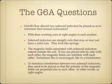How should two solenoid inductors be placed so as to minimize their mutual inductance? With their winding axes at right angles to each other — basically perpendicular. Solenoid inductors are straight coils of wire that may or may not have a solid core, and they look just like springs. The magnetic fields associated with solenoid inductors extend outside of the coil, so if two are placed side by side, the magnetic fields can interfere with each other. To minimize interference, they need to be placed at right angles so the polarity of the magnetic fields are perpendicular to each other.